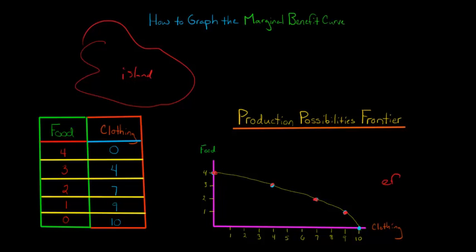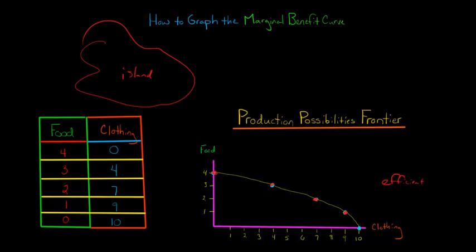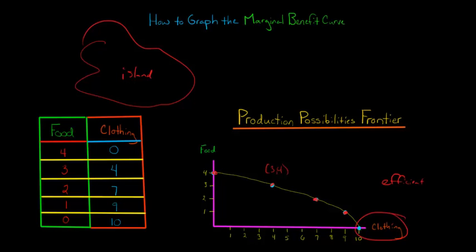What we mean when we say efficient is, for example, at three units of food and four units of clothing, we couldn't produce an additional unit of food — we couldn't do four units of food without giving up at least one unit of clothing. All the points inside the curve are inefficient; we don't want to be there.